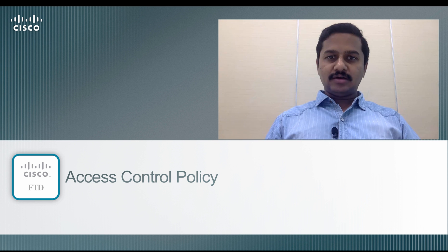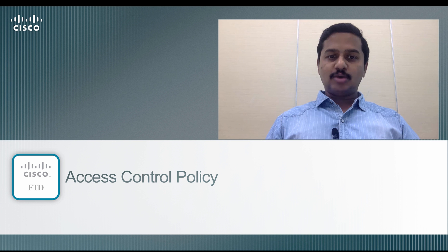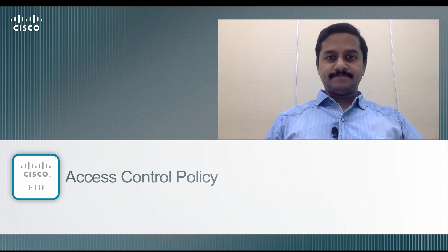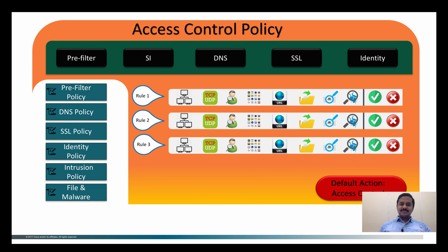This access control policy has various components. In this video series we are going to look at each of these components and see how they impact your policy. Here is the abstract version of the access control policy which you see in Firepower Management Center. We have various components: pre-filter policy, security intelligence, DNS, SSL policy, identity, and user-defined access rules, and at last a default action.